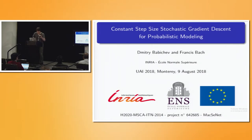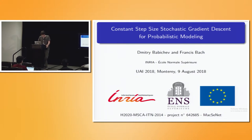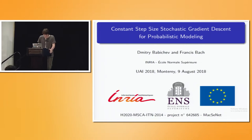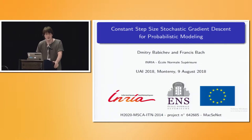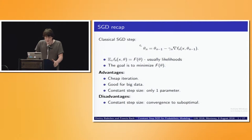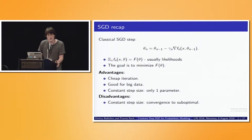My name is Dmitry Babichev and today I'm going to present a joint work with my supervisor Francis Bach, called 'Constant Step Size SGD for Probabilistic Models.' I'll start with a small SGD recap. Stochastic gradient descent is used to optimize a convex function f, which typically represents log-likelihoods and is an expectation over functions f_n representing single observation likelihoods. The goal is to optimize this convex function f.